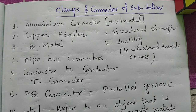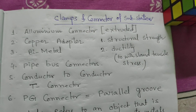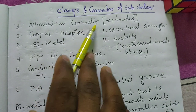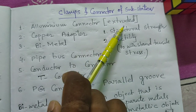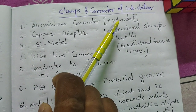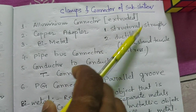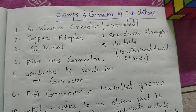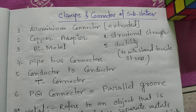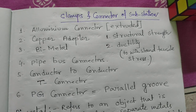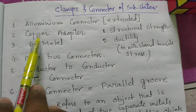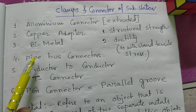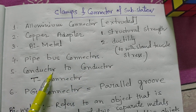First of all, we know that aluminium connectors are being used at substations. We generally use extruded aluminium. What is extruded? Extruded means it has structural strength and ductility. Ductility means it can withstand tensile strength — the material surface is stronger than before.